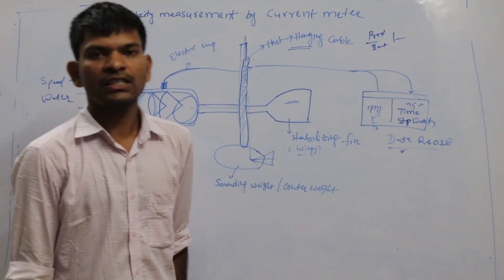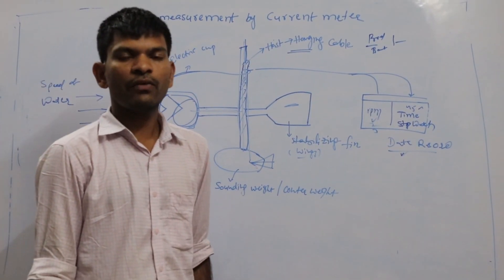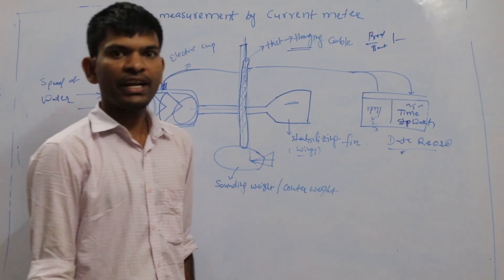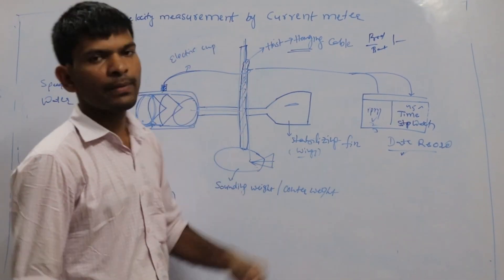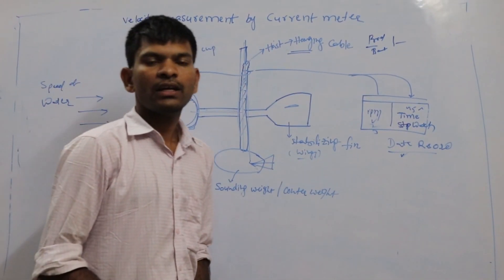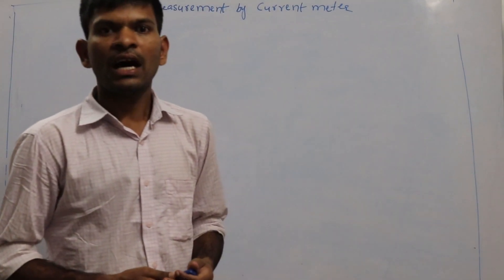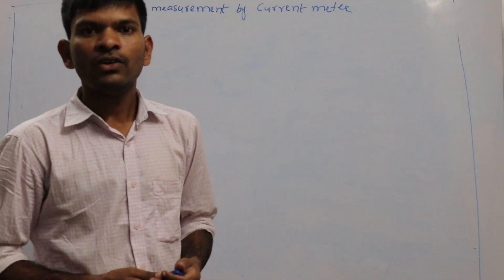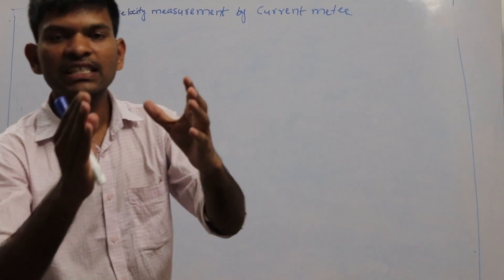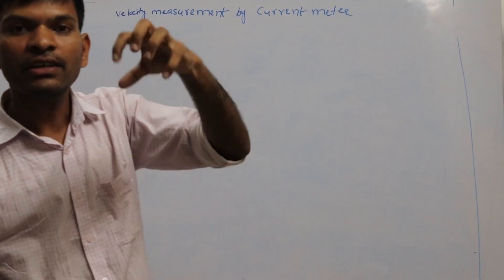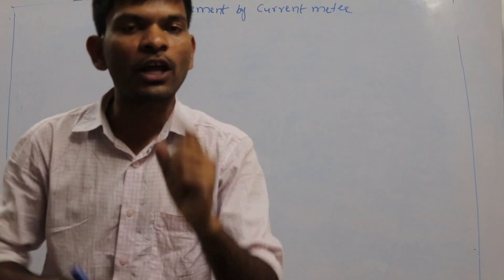Hello friends, in the last session we discussed about the area-velocity method. Now we will discuss about velocity measurement by the current meter. A current meter is a device or instrument which is used for measuring the velocity in a stream or open channel at a particular point.